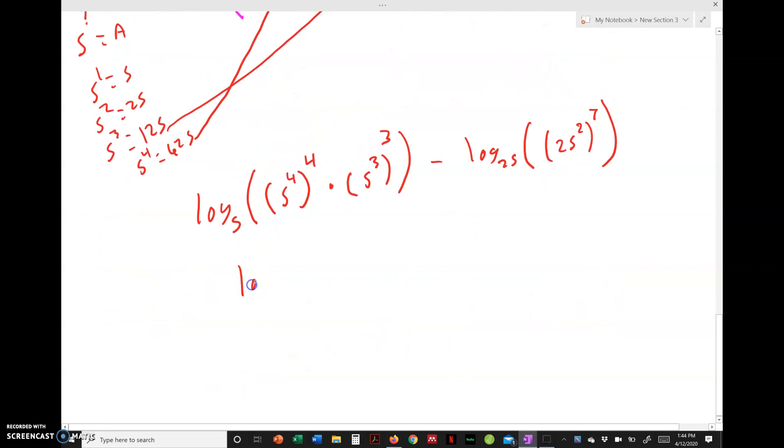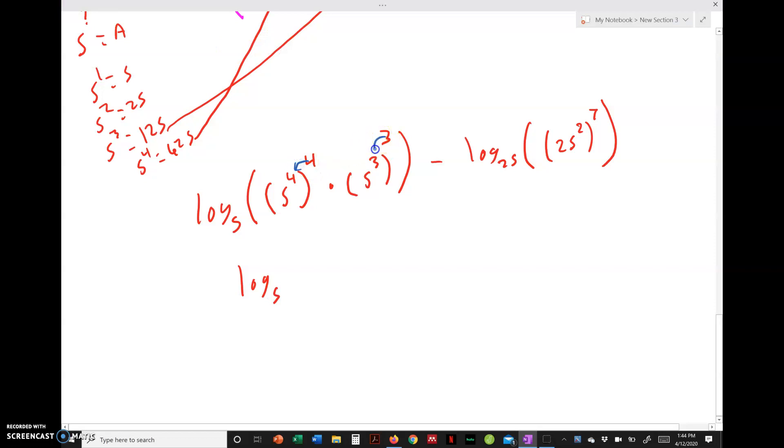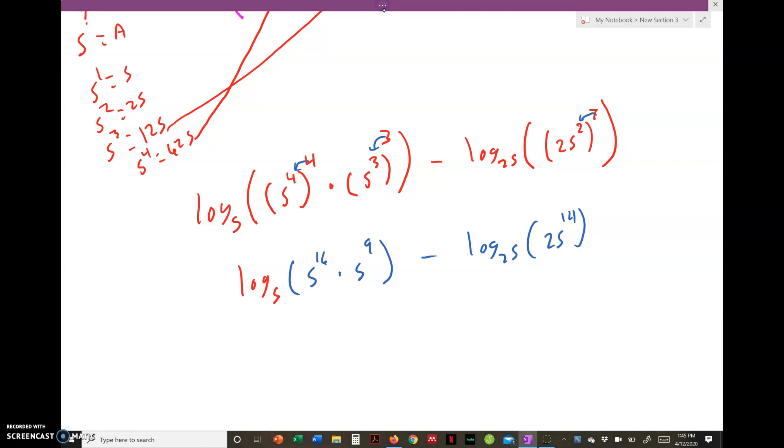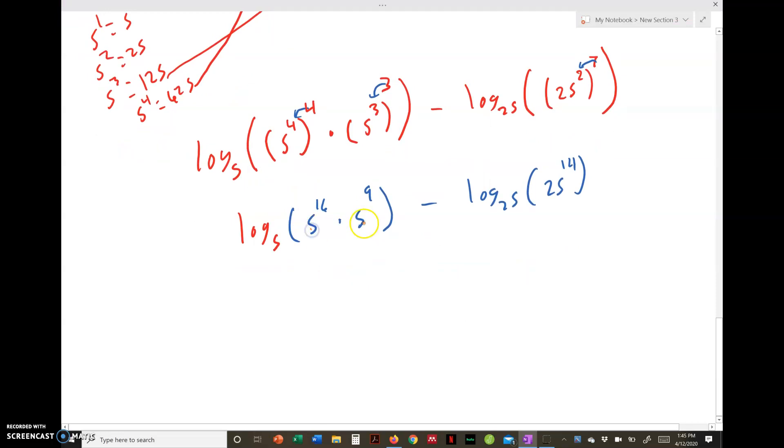So now this is the same as log base 5 of [(5^4)^4 × (5^3)^3]. Now let's do the same thing: 25^1 is 25, 25^2 is 625. Well looky there. Minus log base 25 of (25^2)^7. So this is now log base 5 of (5^16 × 5^9) minus log base 25 of 25^14. Same basis, we add the exponents. So we do 16 plus 9 which is 25. Log base 5 of 5^25 minus log base 25 of 25^14.